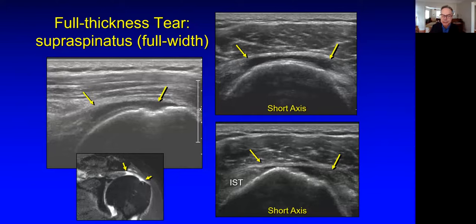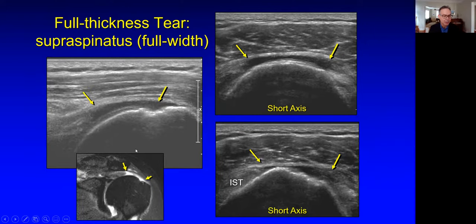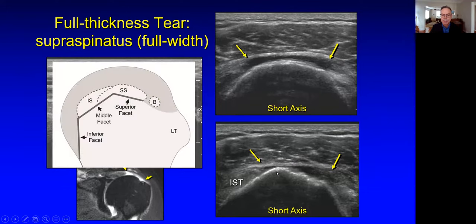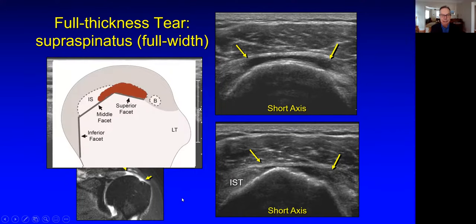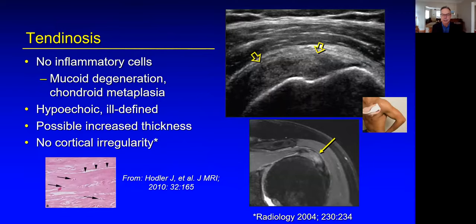Here is a larger full thickness tear — this one is full width, so you can see the degree of retraction. There's the cartilage interface sign, the cortical irregularity, and the flattening of the interface with the deltoid due to volume loss. Here it is filled with fluid on the MR. Looking on short axis and paying attention to the apex of the greater tuberosity separating the superior and middle facets, the entire supraspinatus is torn and retracted. So this is a full thickness, full width tear — another way to indicate that the entire tendon is torn.